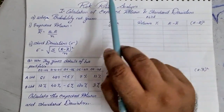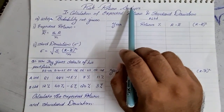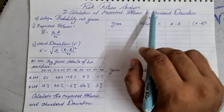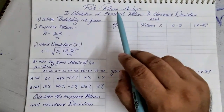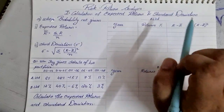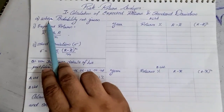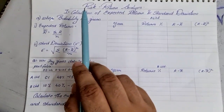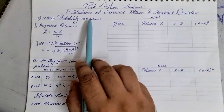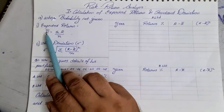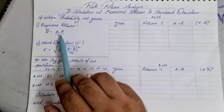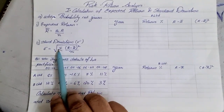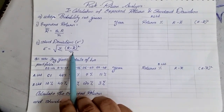The very first type of sum is based on risk and return analysis, where we are going to solve a sum based on calculation of expected return and standard deviation. For finding expected return and standard deviation, there are two types of sums: number one, when probability is not given, and one where it is given. We are going to solve the sum based on when probability is not given. The formula for expected return is r̄ = Σr/n, and the standard deviation formula is the square root of Σ(r − r̄)² / n.